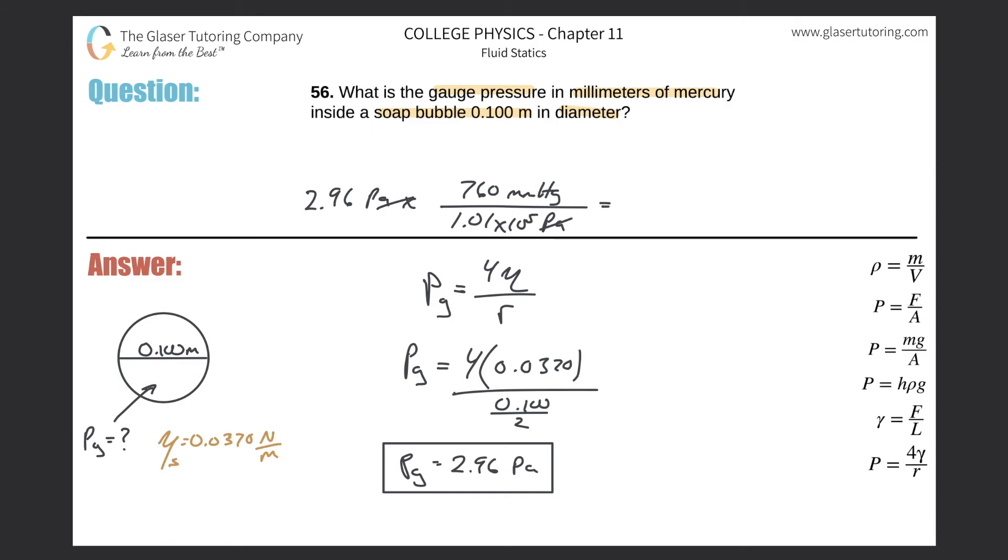So take that answer, multiply it by 760 divided by 1.01 times 10 to the fifth. And what do we get now? So we get a value of about, I'll put in scientific notation. So there's going to be 2.23 or so. It might change depending upon how specific you got with your Pascal conversion value. 2.23 times 10 to the minus 2, and this is now millimeters of Mercury.